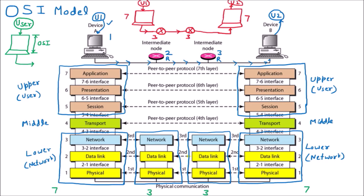Usually we represent the OSI model with a simple diagram assuming a single computer. So if there is a single computer, the diagram is very simple — you only represent application, presentation, session, transport, network, data link, and physical layer. Whenever you are representing a single OSI layer diagram, it means you are representing a single computer where one user is there and data is moving.